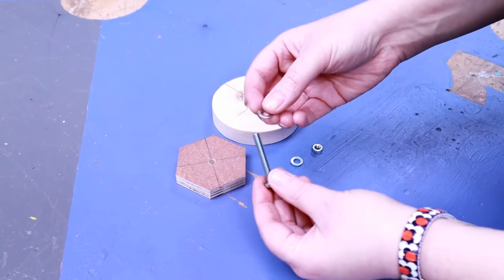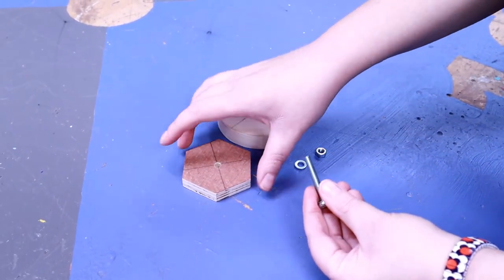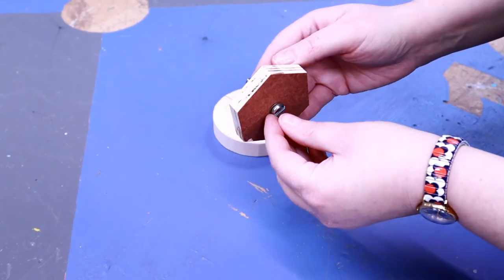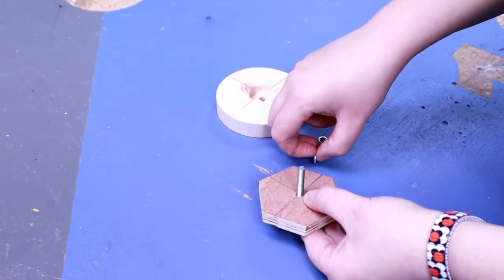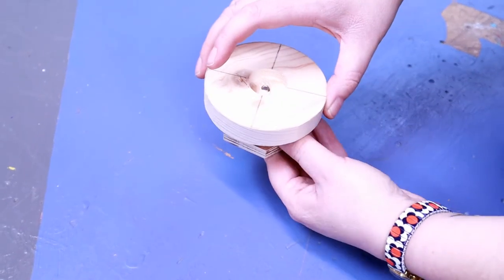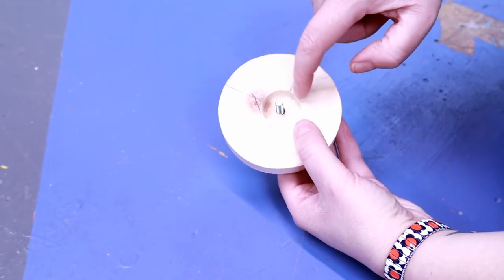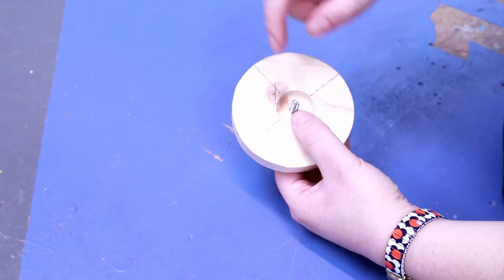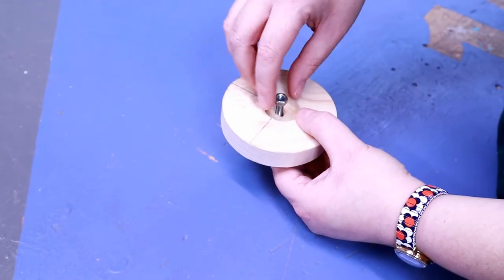So get your bolt, put a washer on, get your hexagon, place it through. Then you get a second washer, place that on. Then get your pine, making sure that the forstner bit hole is on the outside. Then you just screw your nut on.